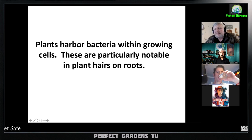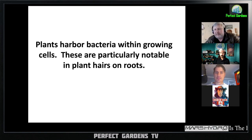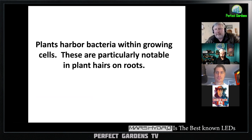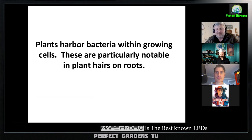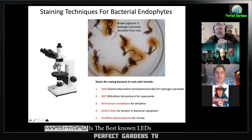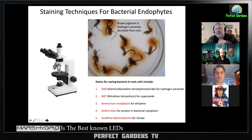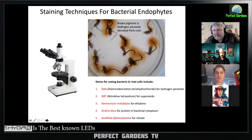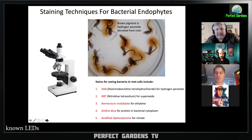Basically, plants suck bacteria into their tissues from the soil. They'll degrade some of them, and some they'll train to work as endophytes and keep them inside the plant. You can see them in roots, but you can't see them with the naked eye. People typically had not seen them before around 2010 or so, because they have to be stained — otherwise you can't tell what they are.